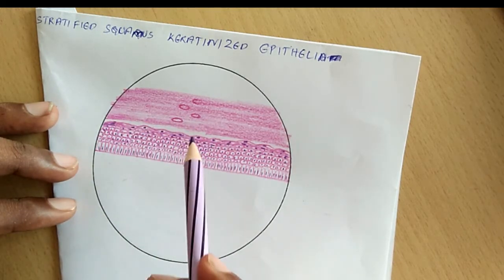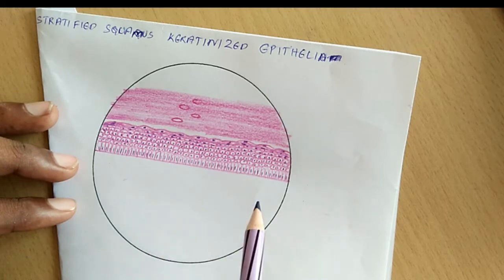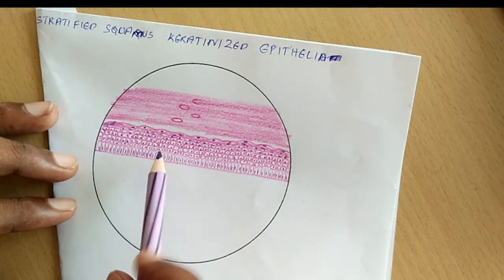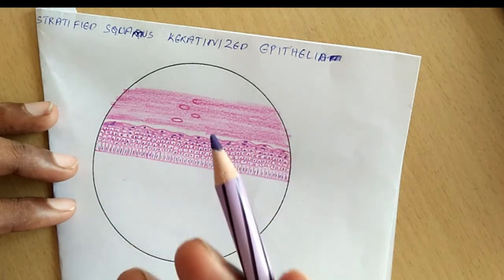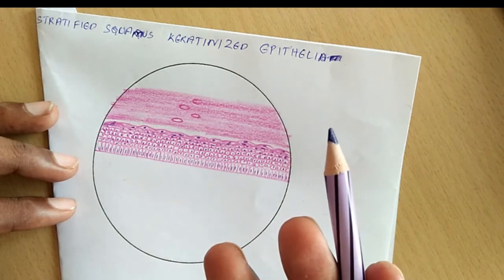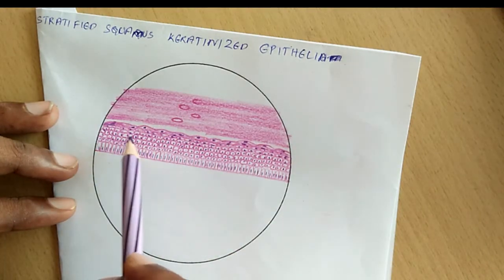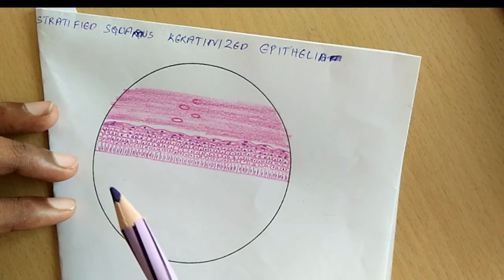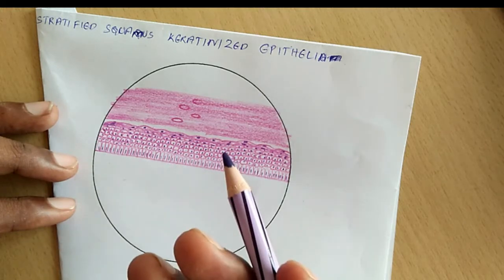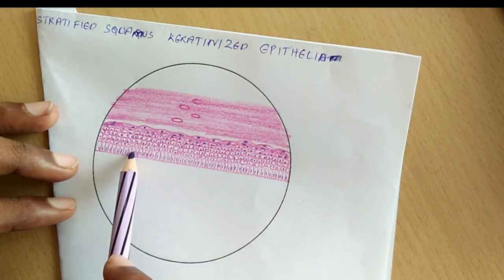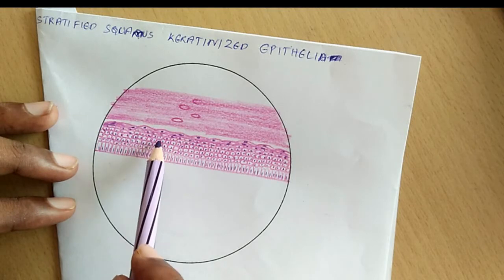So these are the five layers of thick skin. So this is an example of stratified epithelium. Stratified in the sense we have more than one layer of cells. Here you can see this is the base layer, basal layer, then you can see other layers.